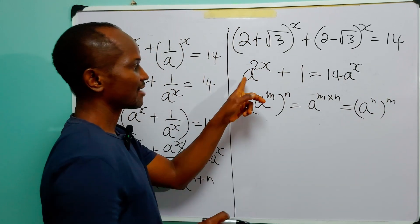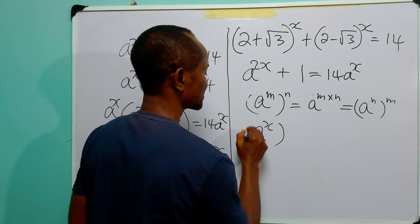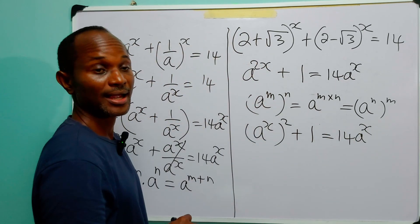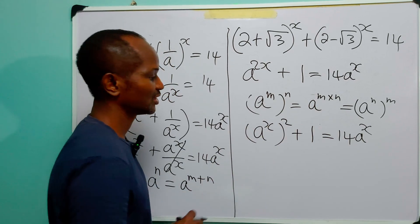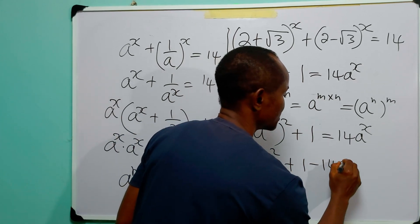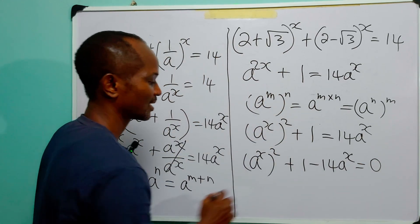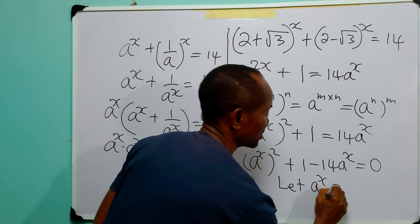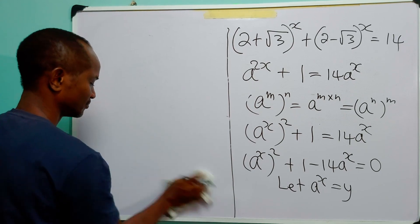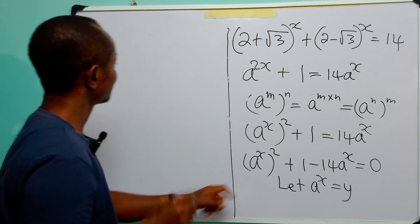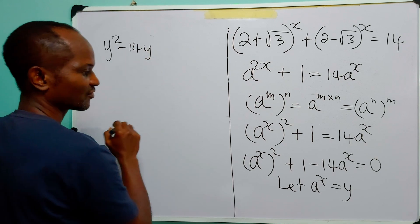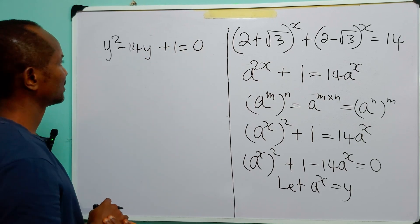So we can write this as A^x squared plus 1 is equal to 14 times A^x. Bringing everything to the left-hand side, we have A^x squared minus 14·A^x plus 1 is equal to 0. Now let A raised to power x be equal to y.